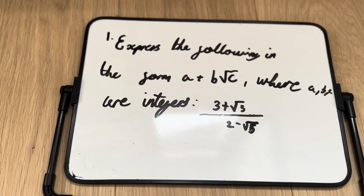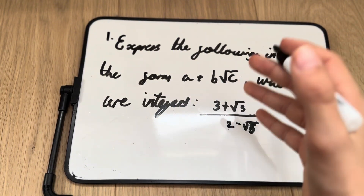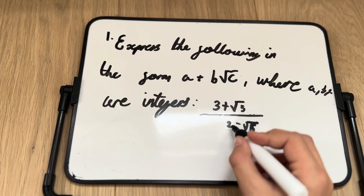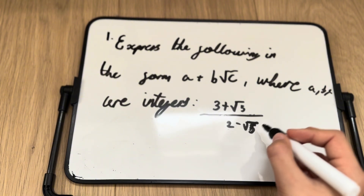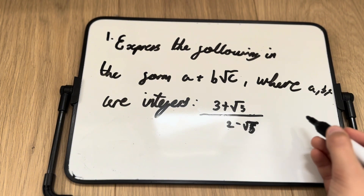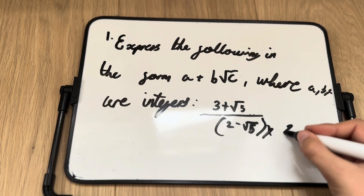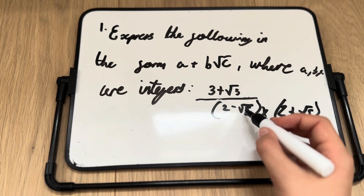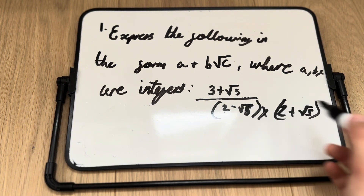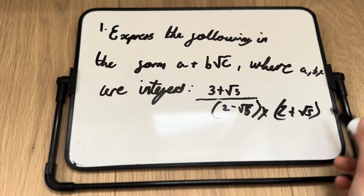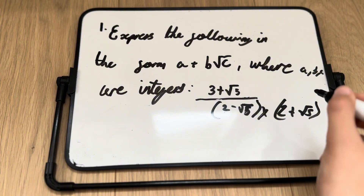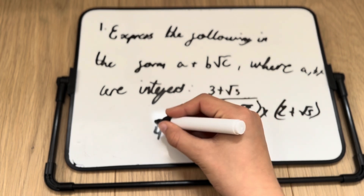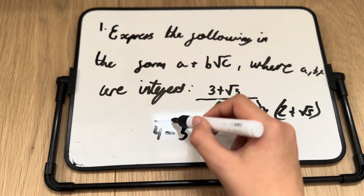What you have to do first is rationalize the denominator. To rationalize it, we multiply by the conjugate. Since the denominator is 2 − √5, we multiply by 2 + √5. If it were just √5 on its own we'd multiply by √5, but because it's 2 − √5 we use 2 + √5. When we do that, the denominator becomes (2 − √5)(2 + √5), which gives us 4 − 5.